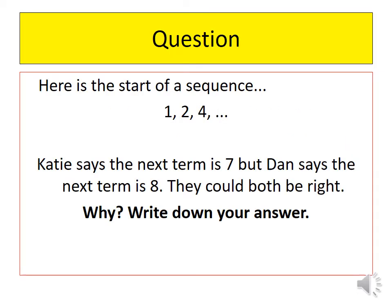Here's the start of a sequence. So we have 1, 2 and 4. We might think about what would come next. But here you can see that there's some disagreement about which number could be next. Katie says the next term is 7 but Dan says the next term is 8. They could both be right, but why? Pause the video and write down your answer.